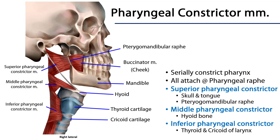The pharyngeal constrictor muscles consist of the superior, middle, and inferior pharyngeal constrictor muscles. The superior pharyngeal constrictor muscle takes its origin on the skull — part of it is on the sphenoid bone, down to the mylohyoid line, and then there is a condensation of connective tissue between the two called the pterygomandibular raphe. That is a condensation of the investing fascia of the superior pharyngeal constrictor muscle as well as the buccinator muscle that is anterior to it.